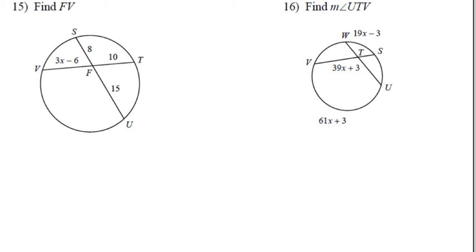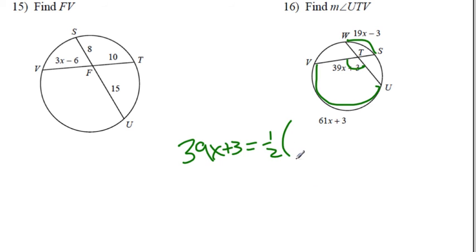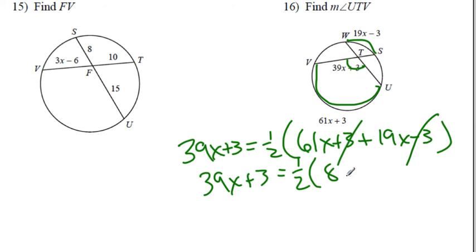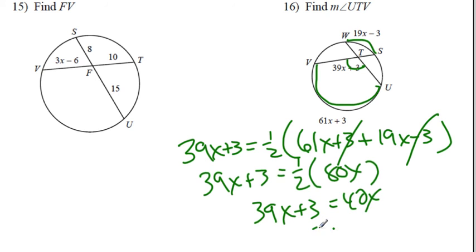Number 16 is the only half-the-sum type problem: the central angle equals half the sum of the two intercepted arcs. Adding 61x + 3 and 19x − 3: the 3 and −3 cancel, giving 80x. So 39x + 3 = 40x, meaning x = 3. Plugging into the angle expression: 61(3) + 3 = 186... wait, let's find UTV: 39(3) + 3 = 120°.